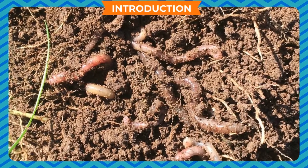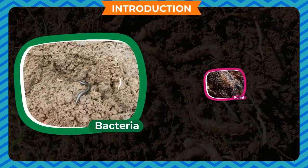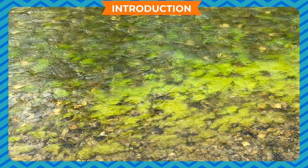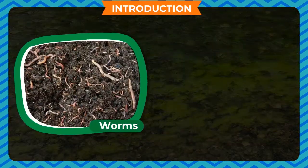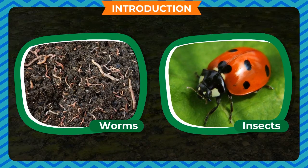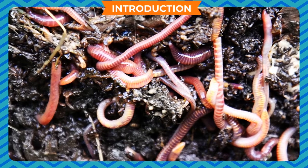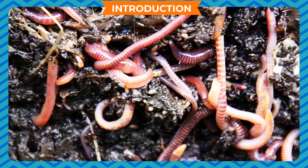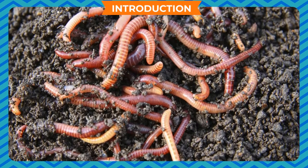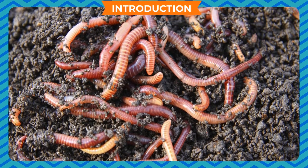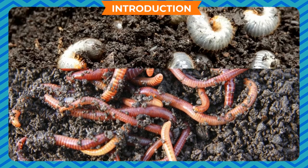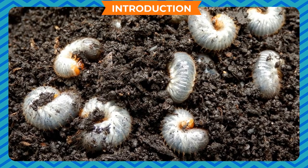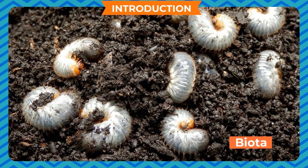Soil also contains tiny organisms like bacteria, fungi, algae, and tiny creatures like worms and insects. Organisms like earthworms and other worms and insects help in burrowing the soil and thereby aerating it. All the organisms living in the soil are often referred to as biota.